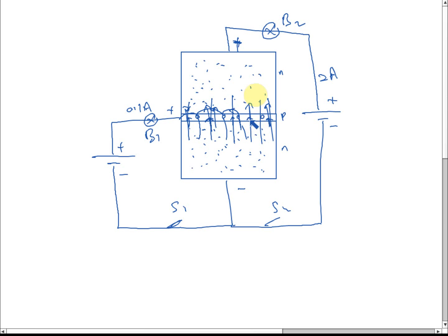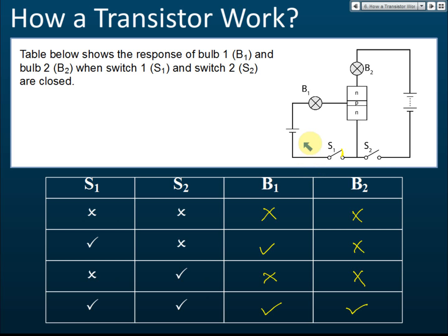Conclusions: the collector circuit is controlled by the base circuit. If the base circuit is on, then current flows in the collector circuit. If the base circuit is off, there is no current flow in the collector circuit. The current in the collector circuit is always much higher than the current in the base circuit, because the base is very thin and lightly doped — most electrons pass through to the collector. Just a small amount of current in the base produces a large amount of current in the collector circuit — that's why the transistor can be used as an amplifier.